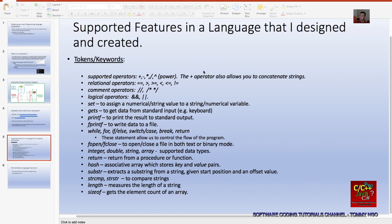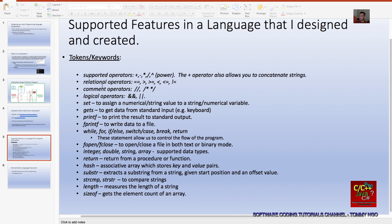In designing my programming language, these are the features that are being supported. These are the tokens or keywords that are recognizable by the interpreter. You have supported operators like plus, minus, star, divide, power. The operator can also be used to concatenate strings. Here are the relational operators, similar to C, C++. Here are the logical operators, AND and OR. I have not supported the NOT sign yet.